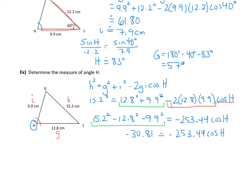To get cosine of H by itself, divide both sides by negative 253.44. You can see this calculation is much more complicated — that's why above I used the sine law instead. Dividing gives cosine of H approximately equal to 0.1216.